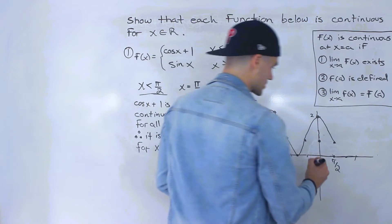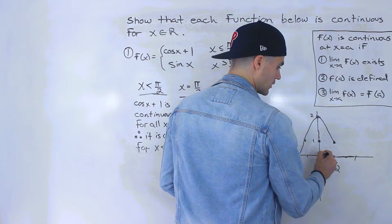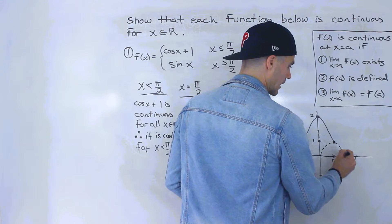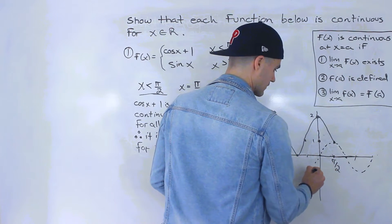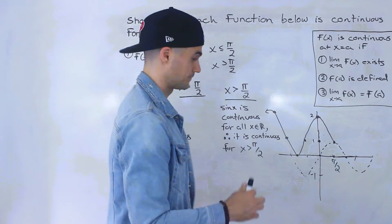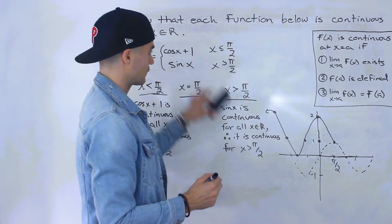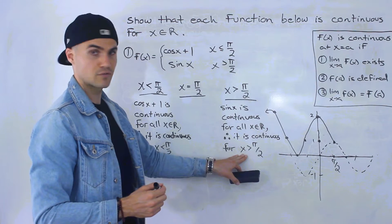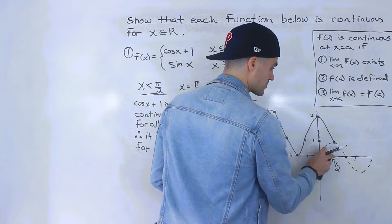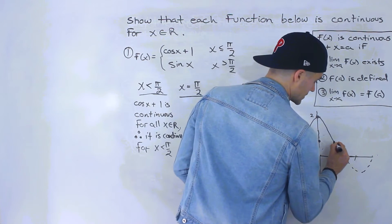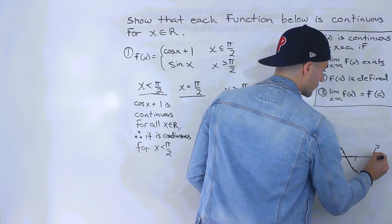Sin(x) starts at the origin — this is a y value of one — and it looks something like that, going on forever to both positive and negative infinity. But for this piecewise function, it's only for x values greater than π/2, so we forget about the portions less than π/2 and continue the graph from there.